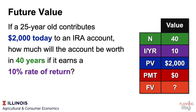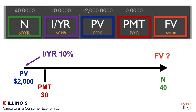Let's diagram this over a timeline. We start with $2,000 as the present value, growing at 10%, so on our timeline we'll write 2,000 for PV and 10 for I. We'll put zero as payment — we don't want to mess that up — and we'd have 40 as N for the number of periods, assuming we're set to one period per year.